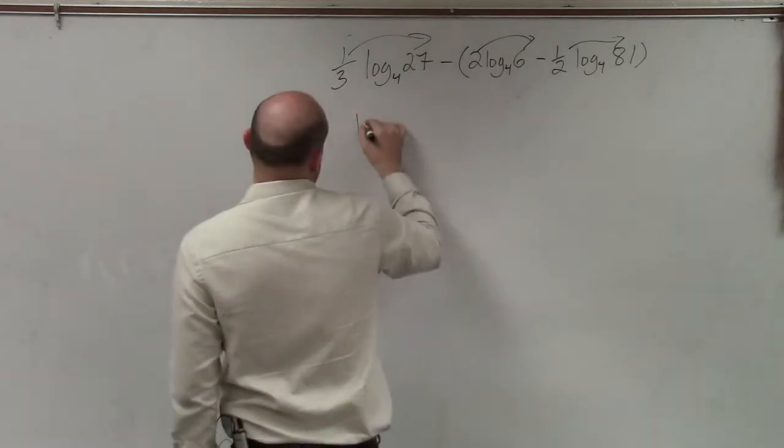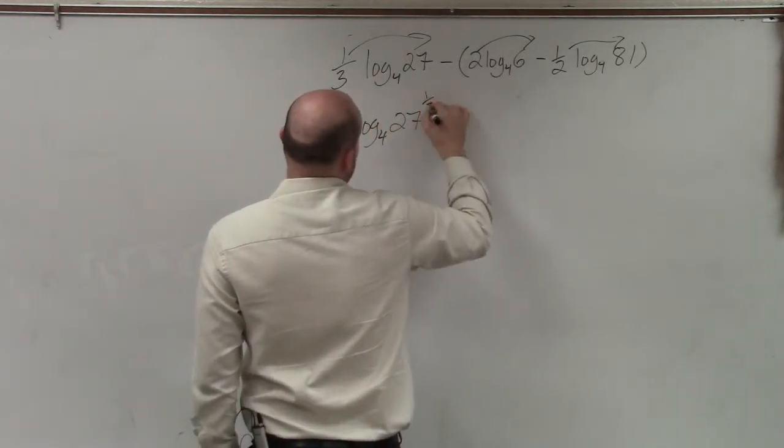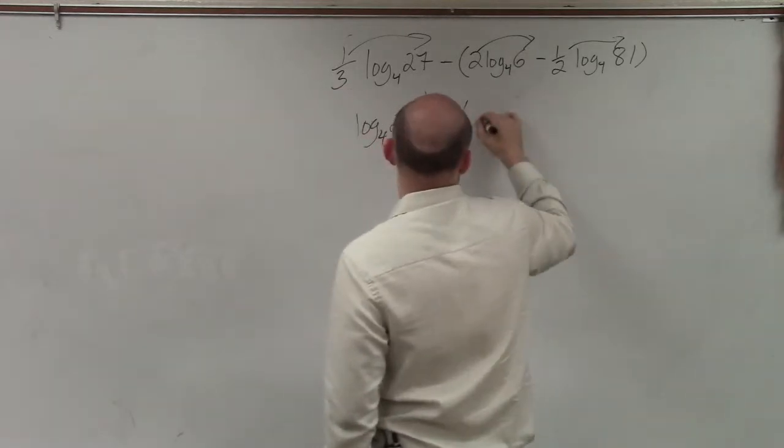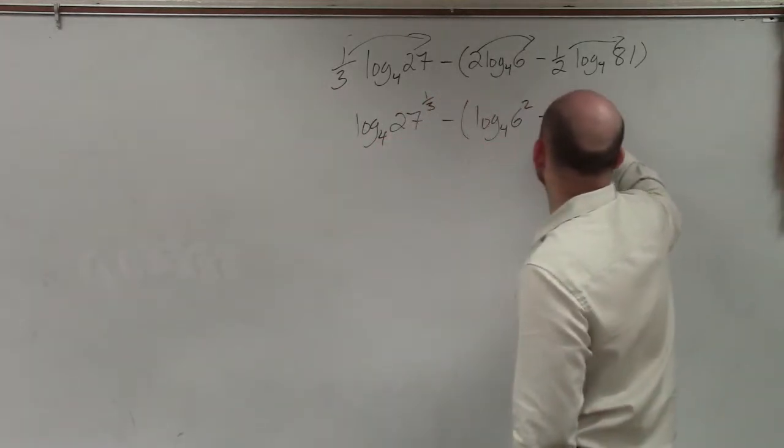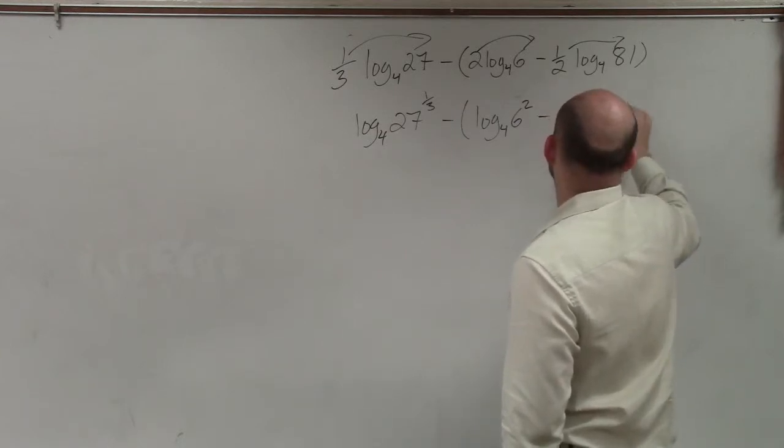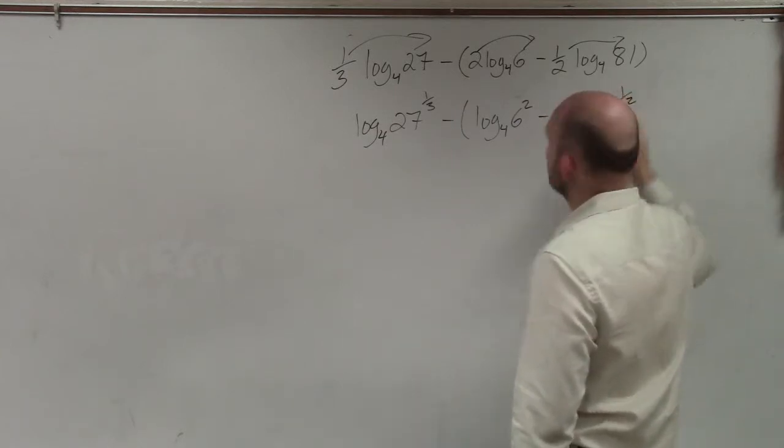So I can rewrite this as log base 4 of 27 to the 1/3 minus parentheses log base 4 of 6 squared minus log base 4 of 81 to the 1/2 power.